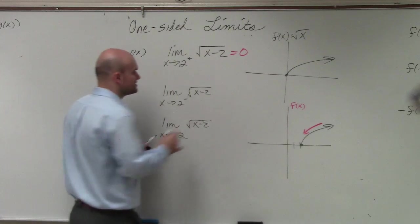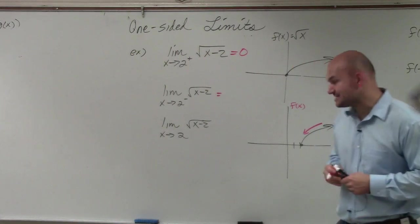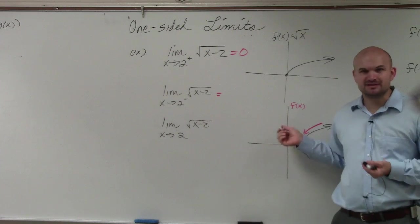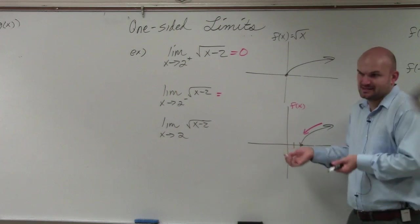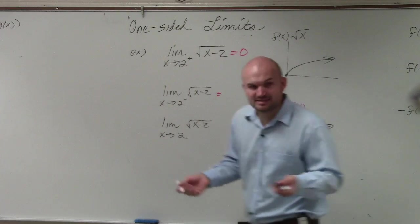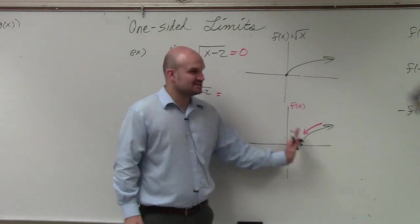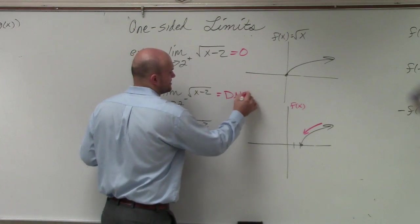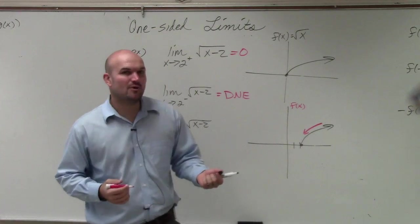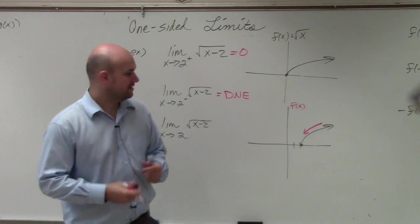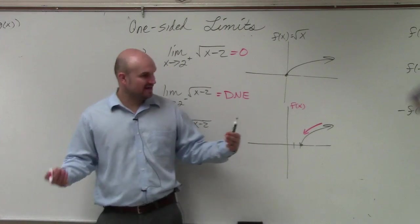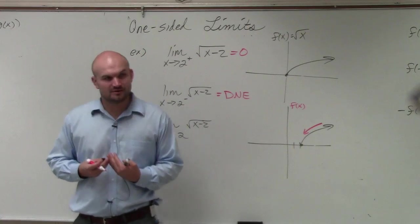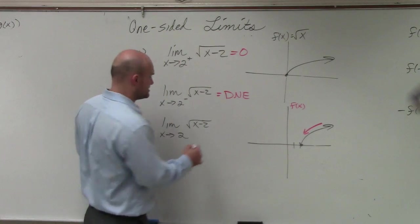However, if you guys look at this, if we approach from the left-hand side — do we have a left-hand side? There's not even a graph on the left-hand side. It's not that it's not continuous; it is a continuous function. But there is no left-hand side, so this does not exist. And furthermore, if we're looking at the general limit, if I don't have a function that approaches from the left-hand side, then we can say that the general limit also does not exist.